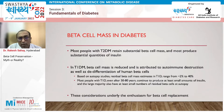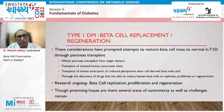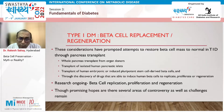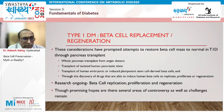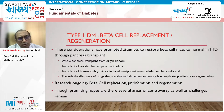In type 1 diabetes, because a significant amount of beta cell mass is lost, there is a role for whole pancreas transplant, transplant of selected human pancreatic islets, and transplant of embryonic or pluripotent stem cells programmed to develop into beta cells. Research in this area is ongoing, with a lot of promise but several challenges and controversies.